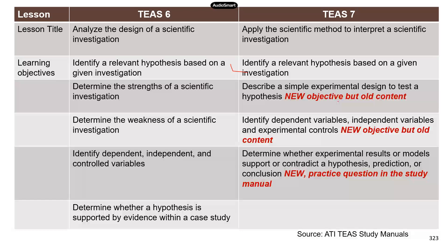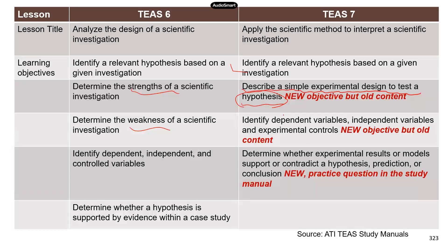The second objective: in TEAS 6, it's to determine the strengths and weaknesses of a scientific investigation. Now in TEAS 7, you need to be able to describe a simple experimental design to test a hypothesis. It looks like this is new content in TEAS 7, but really it's been covered in TEAS 6 — the study manual talks about hypothesis and experimental design.